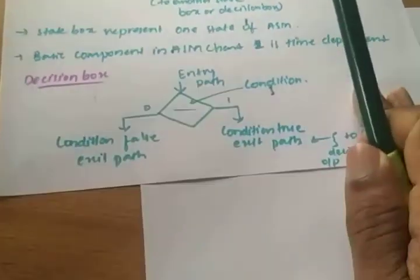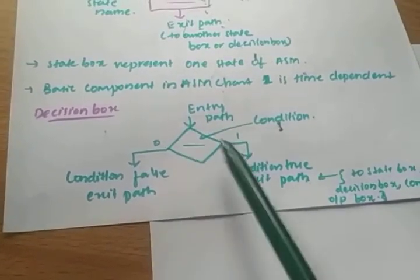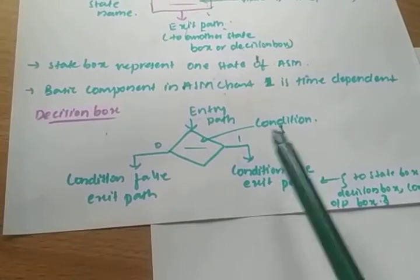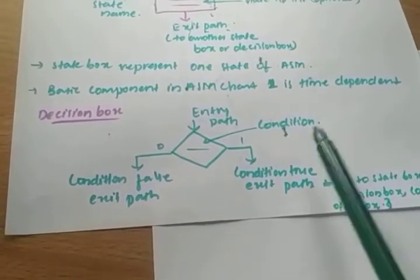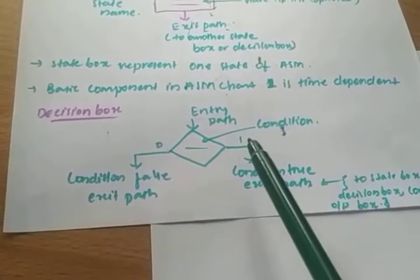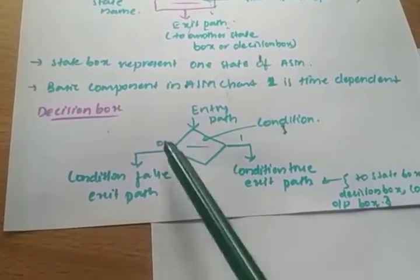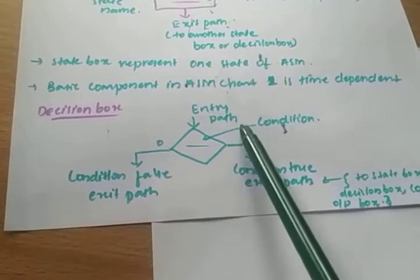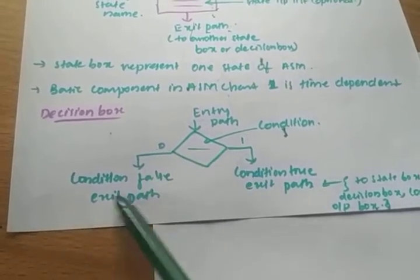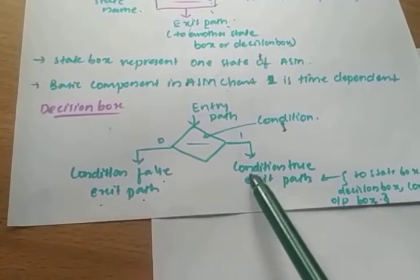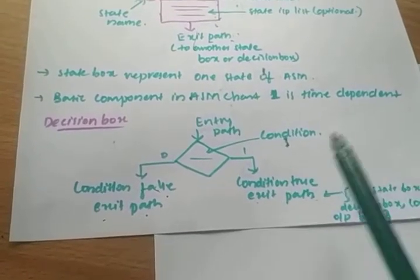The second block is the decision block. We need to take a decision — for example, suppose we are in state S0: what happens if 0 is given, and what happens if 1 is given? For that decision we represent a decision box, shaped like a diamond, with one entry point and two exits. Zero means condition false exit, and one means condition true exit. This exit is also given to another state box, decision box, or condition box.